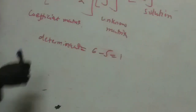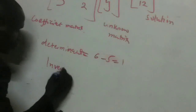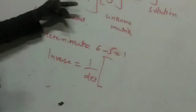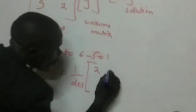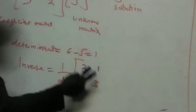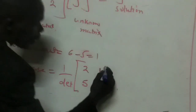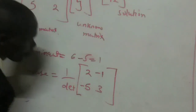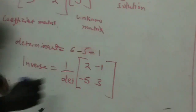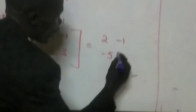Having got the determinant, we now get the inverse, and the inverse is 1 over the determinant multiplied by the adjusted matrix. We swap the elements in the leading diagonal — where there was 2 we write 3, and where there was 3 we write 2. Then the other elements we negate. Since the determinant is 1, the inverse of this matrix is: 2, negative 1, negative 5, 3.